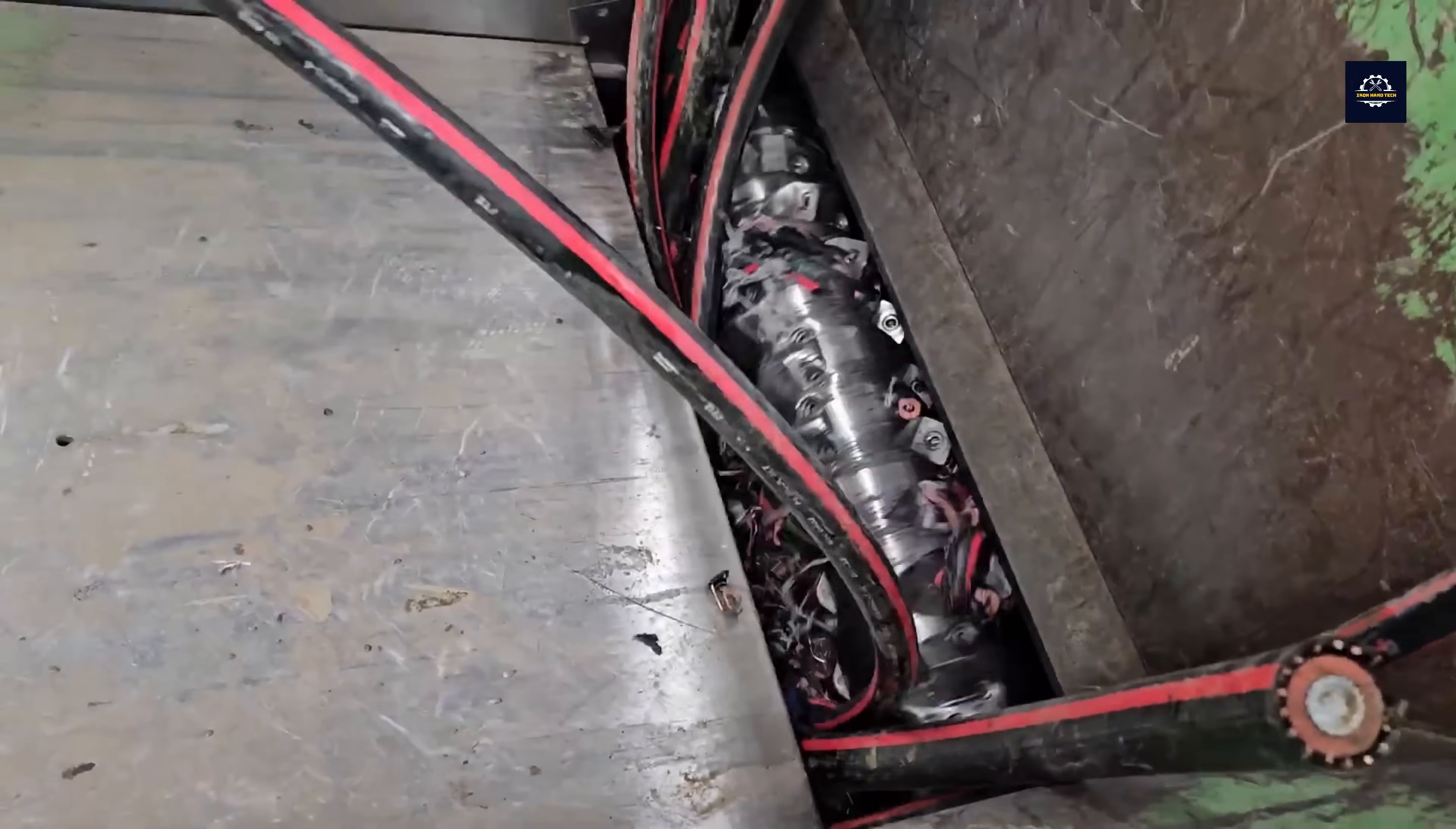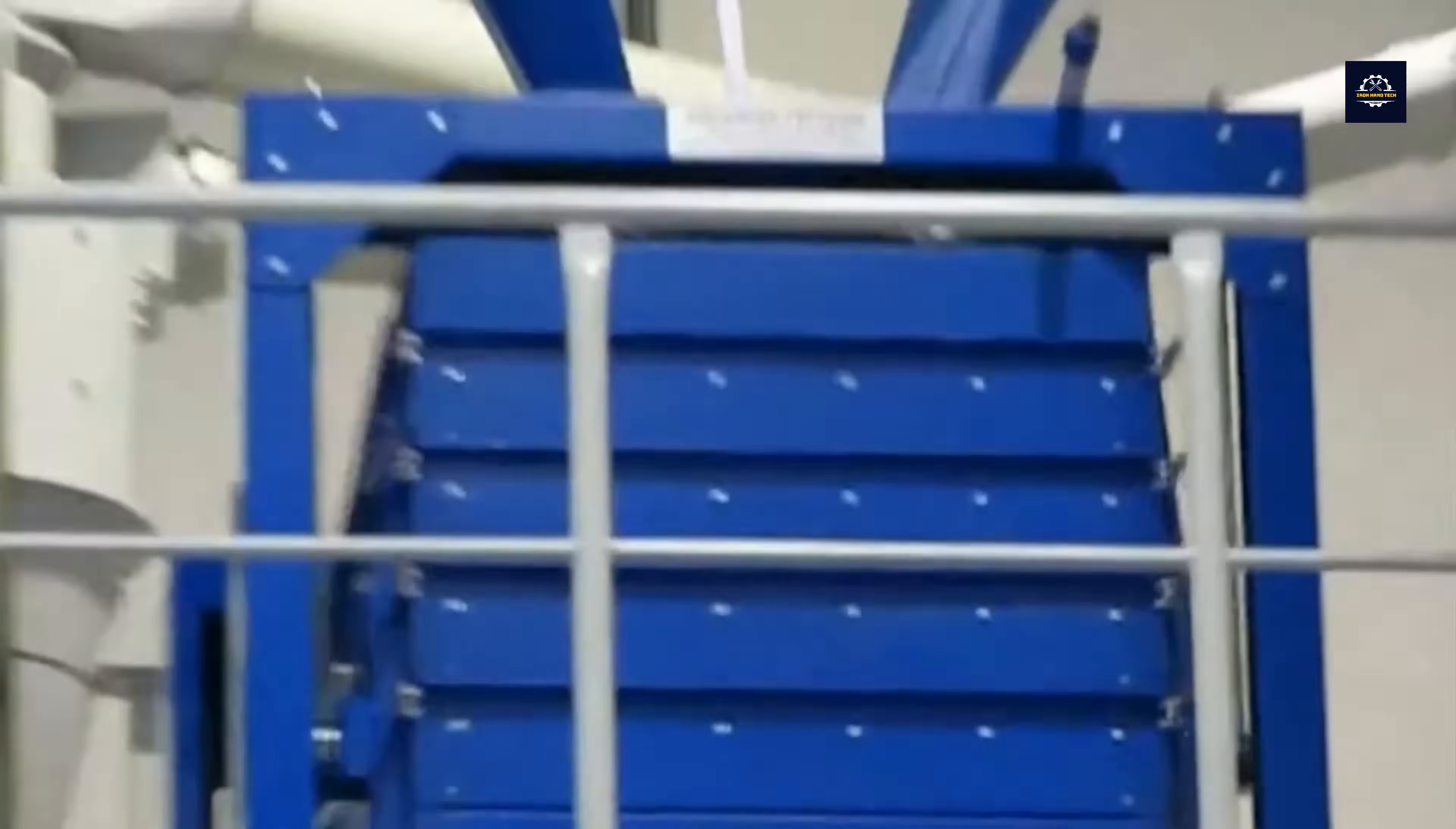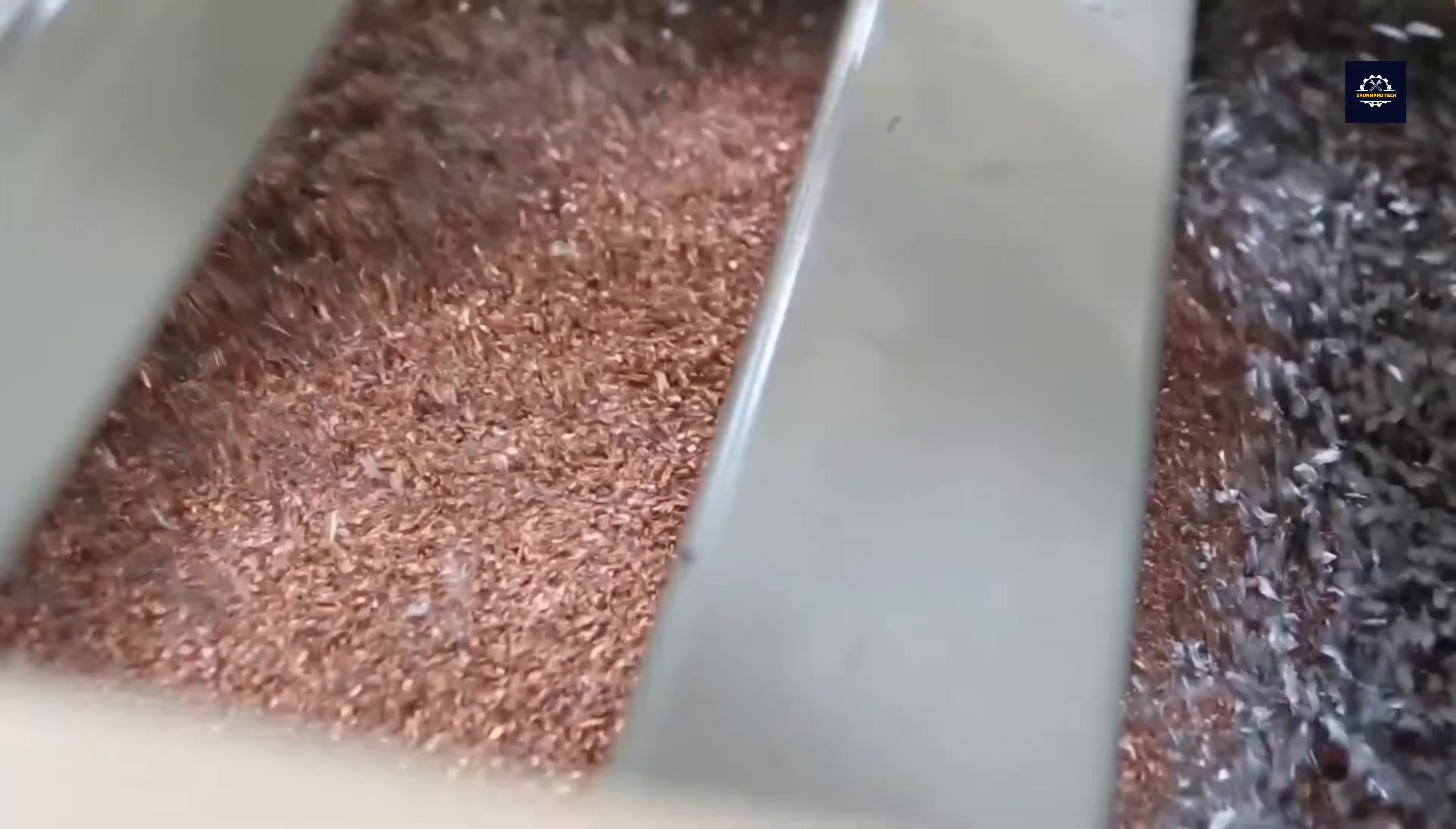The next task is to separate the copper from the mixture. A pneumatic separator takes on this role by blowing air through the wire scraps in a chamber. The strong airflow blows the lighter plastic or rubber insulation away from the copper, which is heavier and falls to the bottom.